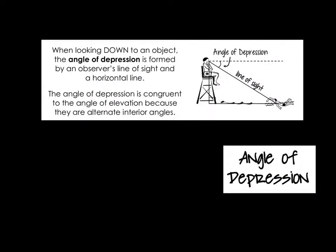We did say this video was all about angles of elevation and angles of depression. An angle of depression is when you're looking down on an object — like a lifeguard looking down, formed by the observer's line of sight and a horizontal line up here. Notice that we also have a horizontal line at the bottom, making these two lines parallel with the line of sight as a transversal. So the angle of depression is congruent to the angle of elevation because they are alternate interior angles.